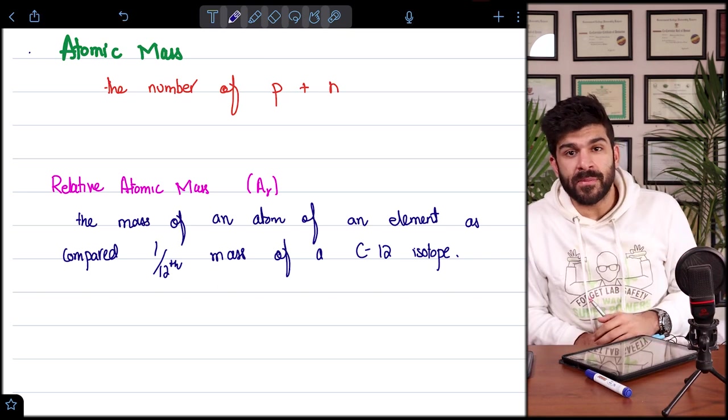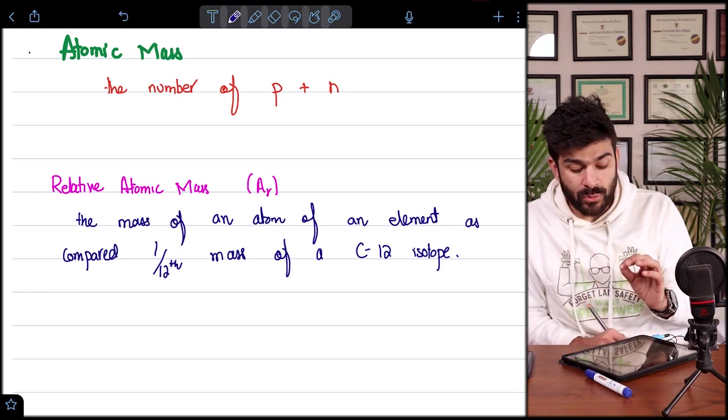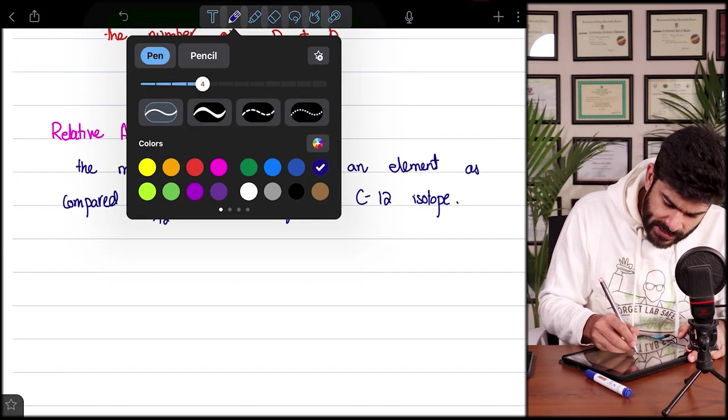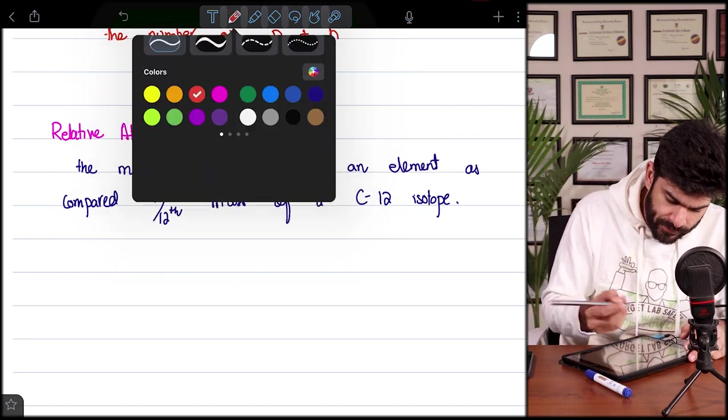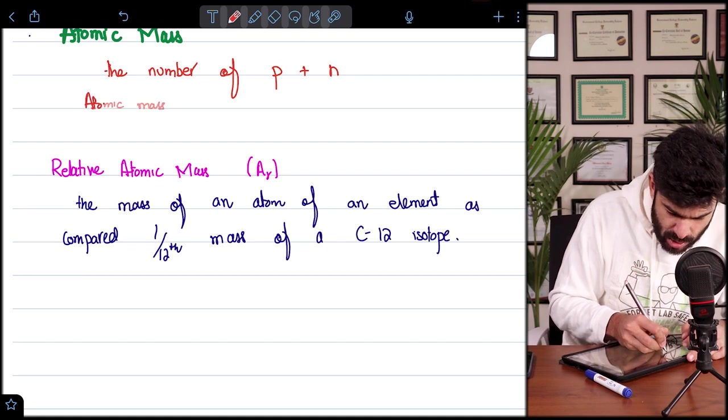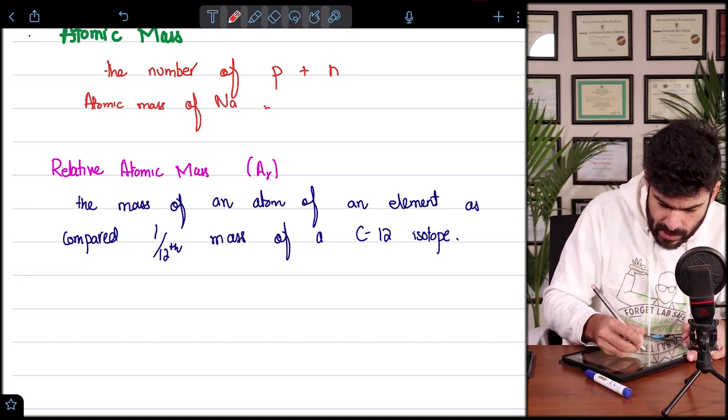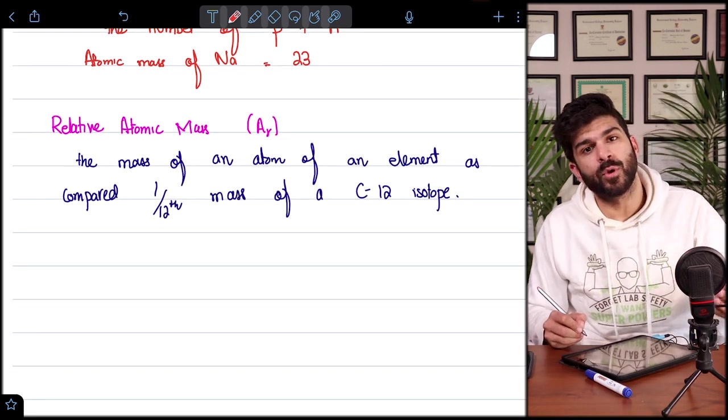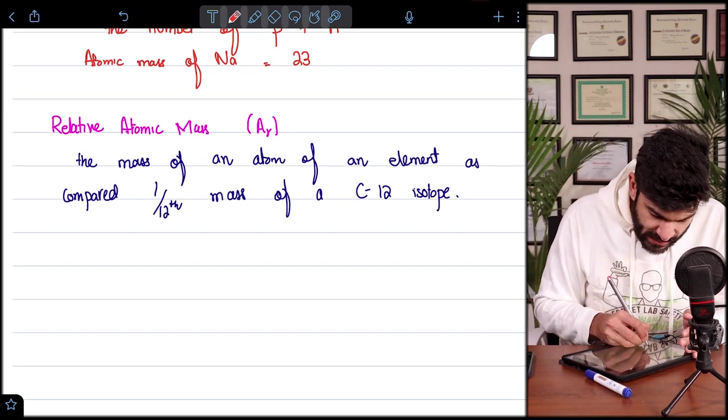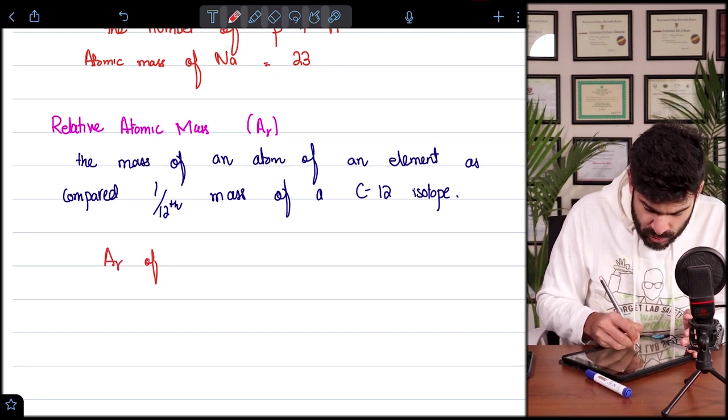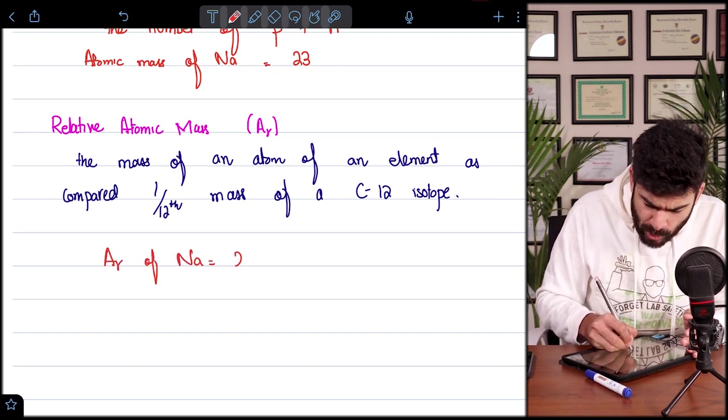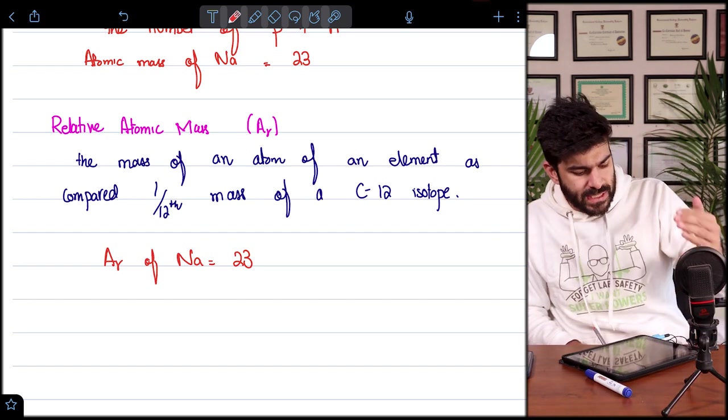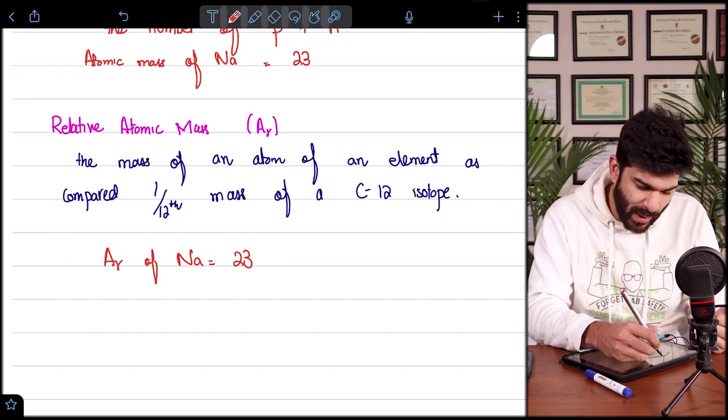But then why do we do this definition? Because they may ask you this definition in the exam. So what is the relative atomic mass? The mass of an atom of an element as compared to one twelfth mass of carbon 12 isotope. So as we know that the atomic mass of sodium is 23, so the AR, the relative atomic mass of sodium, that will also be 23. There is not much of a difference in the value here, but the concept is here, the relative atomic mass.